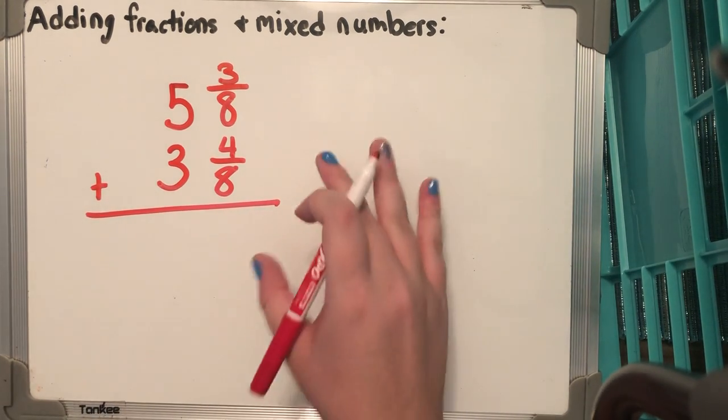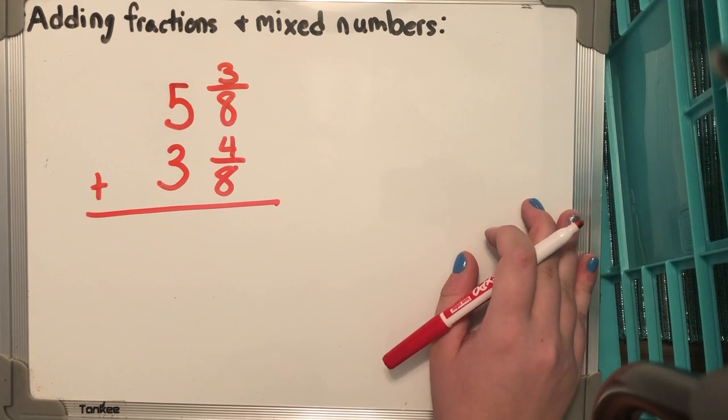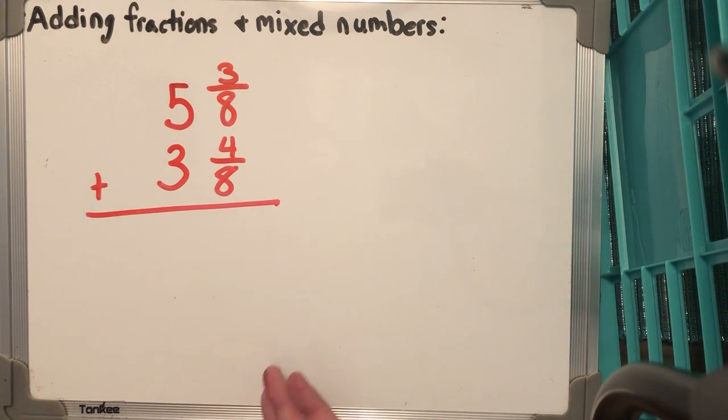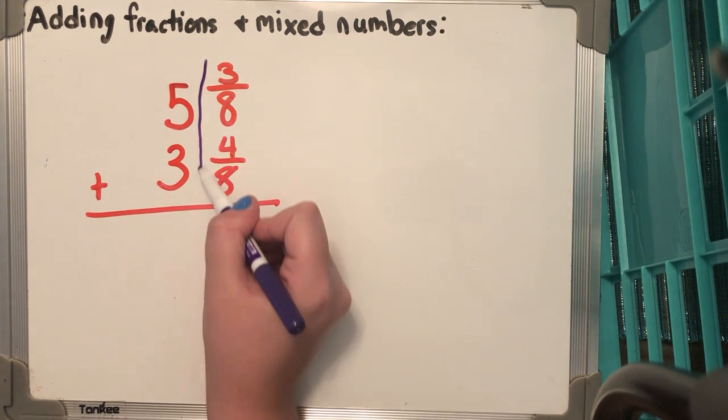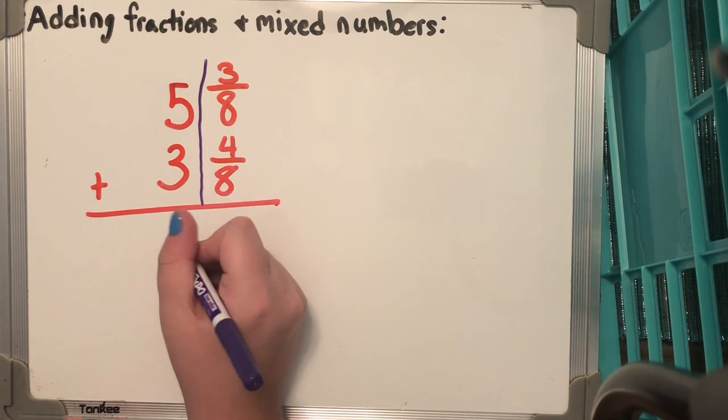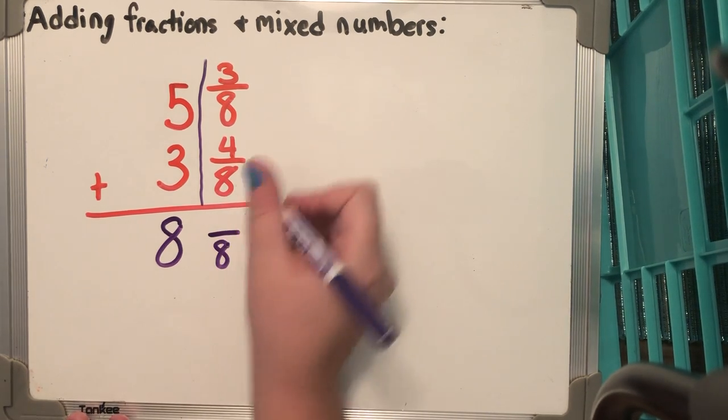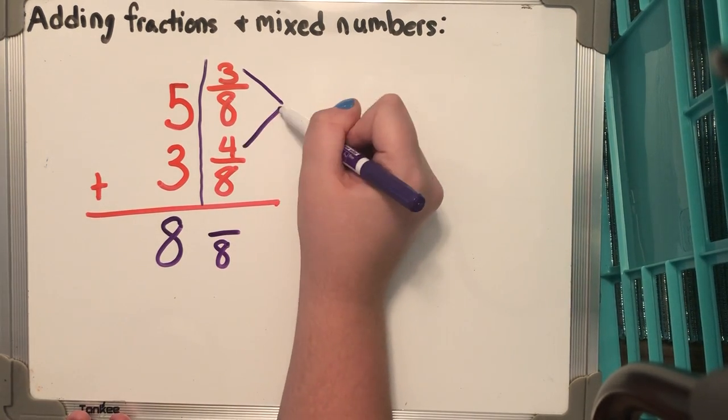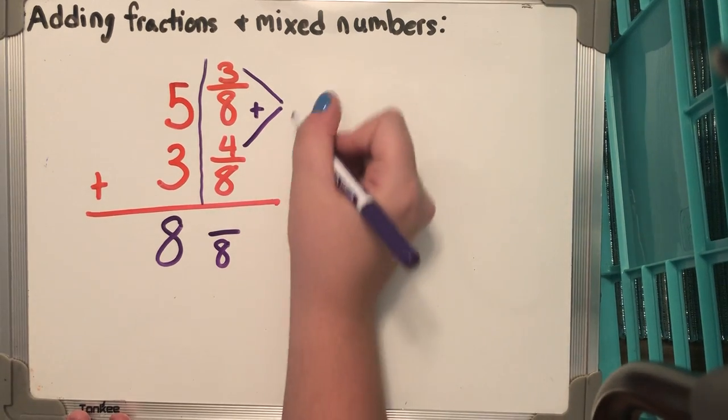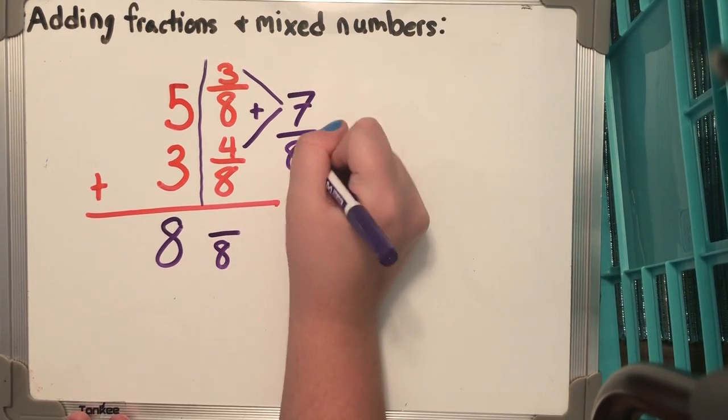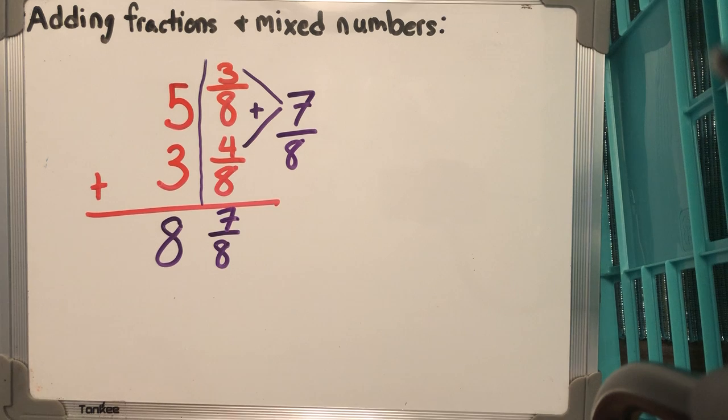When you get this, you can either rewrite it horizontally out like we normally do, or you can still add it this way, which is not a problem. All you do, you can split this down. 5 + 3 = 8. And you know that our fraction is going to be over 8. So 4 + 3 = 7. So it's going to be 8 7/8.